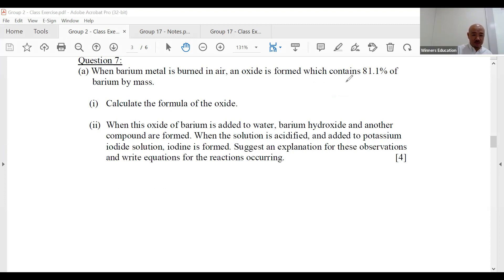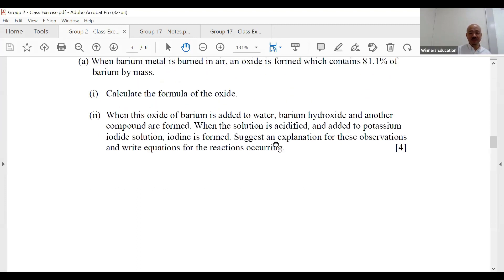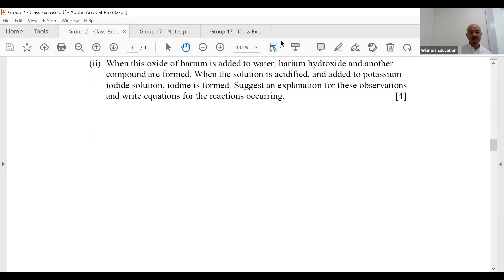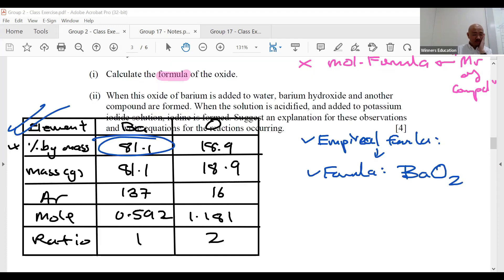They ask you to calculate the formula of oxide. Is it still BaO, or could be something else? You don't know until you do the calculation. So when you see 81.1% of barium by mass, immediately what is the formula and the step you undertake? Empirical formula, since sec 3, there's no other way to go. This is called barium peroxide, because there's an O2 here.